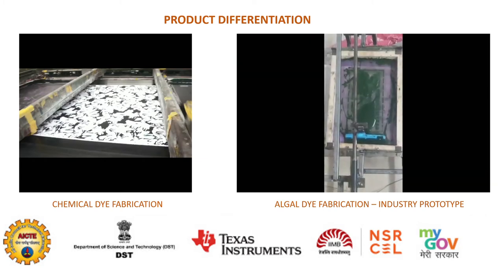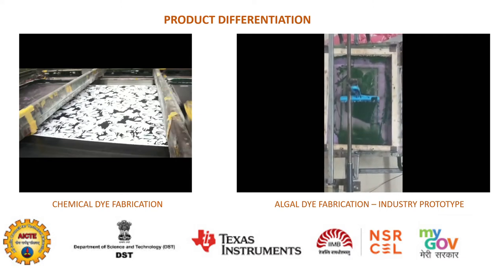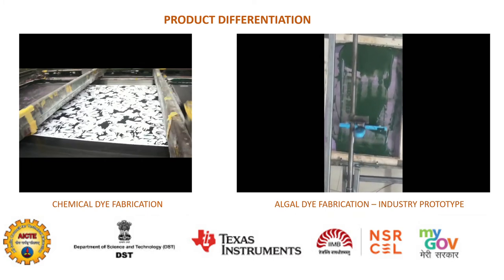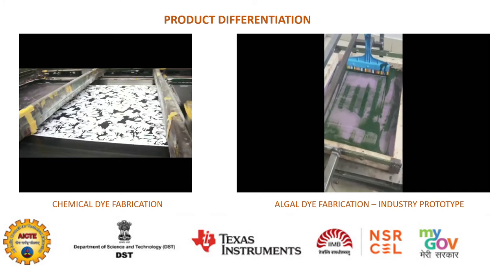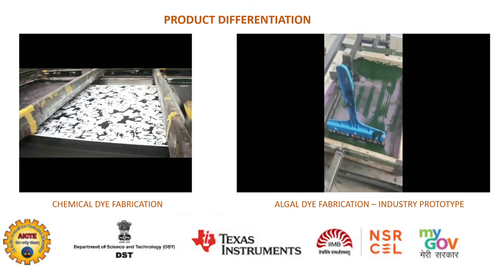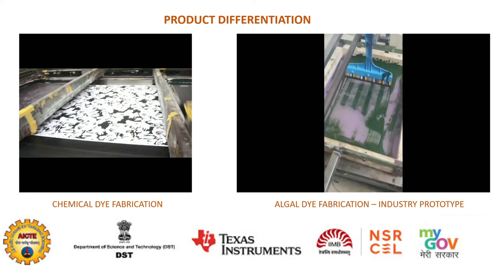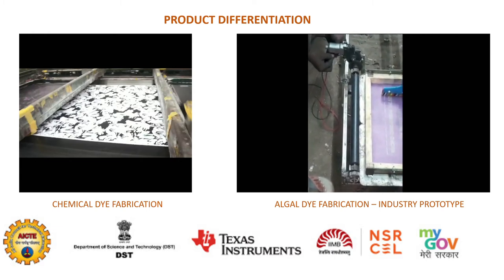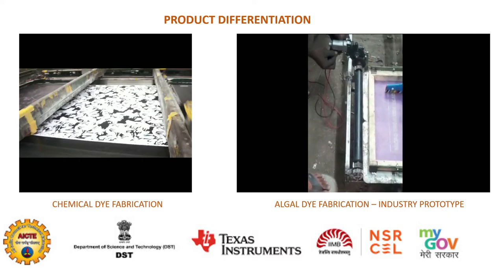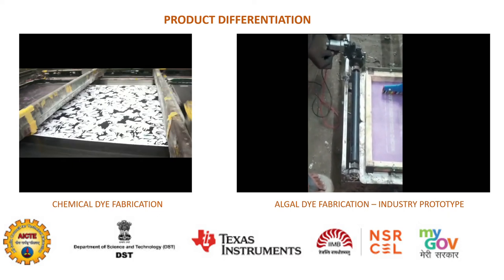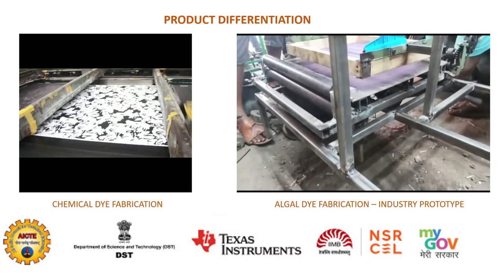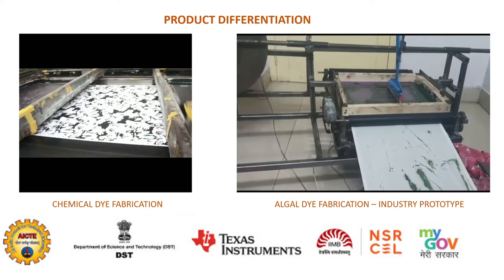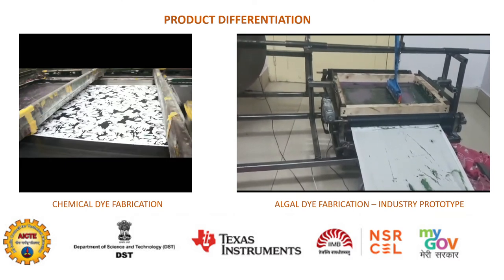The green dye shown in this frame is the algal dye developed by our team. We collected the algae from water bodies, cleaned, dried, and powdered it, then mixed it with certain binders. The fabric is printed using this process and finally removed from the algal dyeing setup.